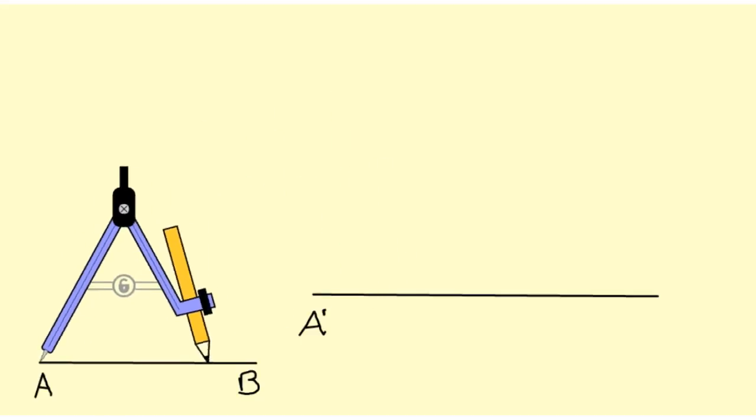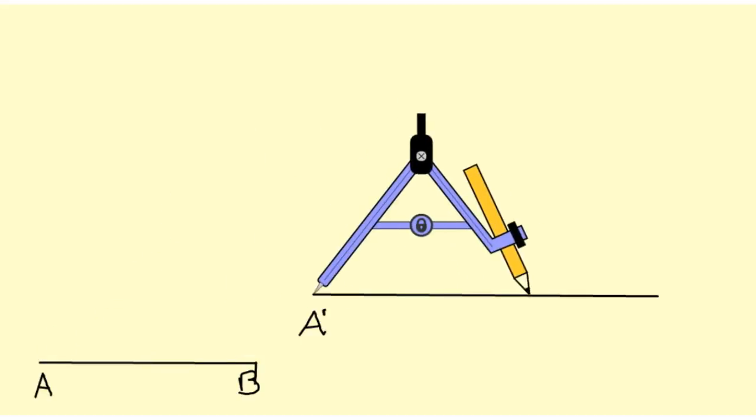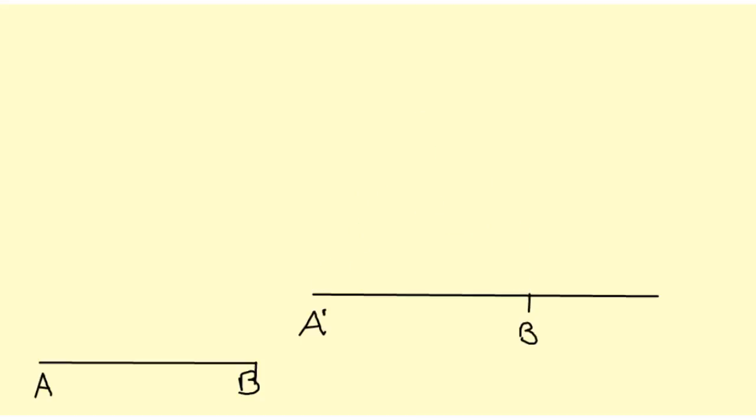I'm going to label the endpoint A' because it's a copy of point A. Then I'm going to take my compass and put the point on A. I'm going to open it out the length of AB. I'm going to pick my compass up and copy it over onto A'. I'm going to label that as B' because that is a copy of segment AB.